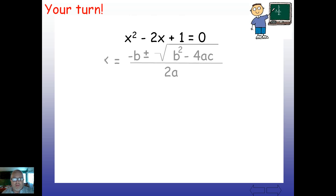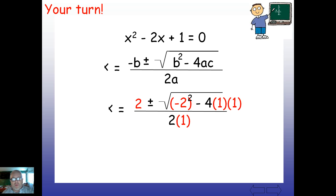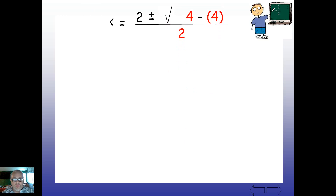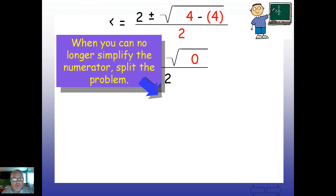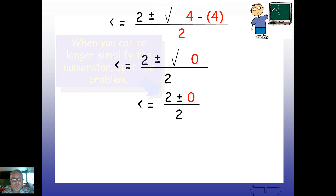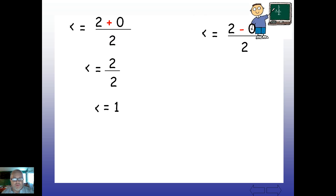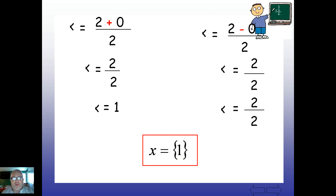How'd you do? Did you plug in 2 for b, 1 for a, and 1 for c? Note that b is negative 2, so the opposite of b is positive 2, but it's still negative 2 inside the radical. Negative 2 squared gives positive 4; then multiply backwards: 1 times 1 times negative 4. So 4 minus 4 equals 0, and the square root of 0 is just 0. That leaves us with 2 plus or minus 0 over 2. In both cases we get 2 over 2, which is 1. Our solution set is {1} — this equation has exactly one solution.